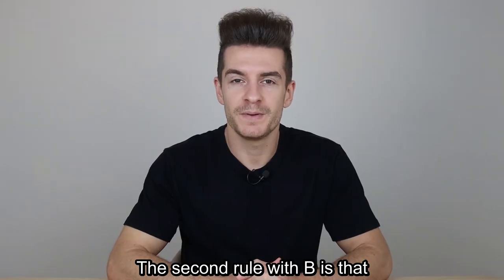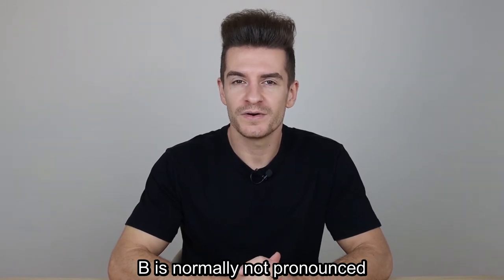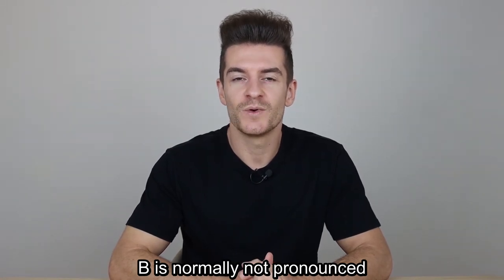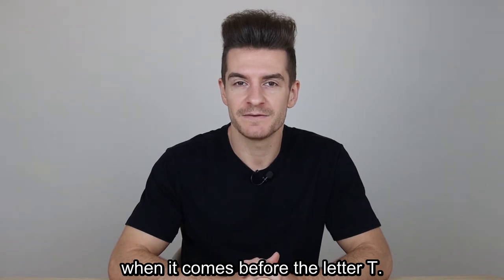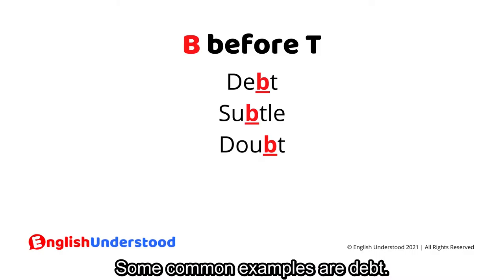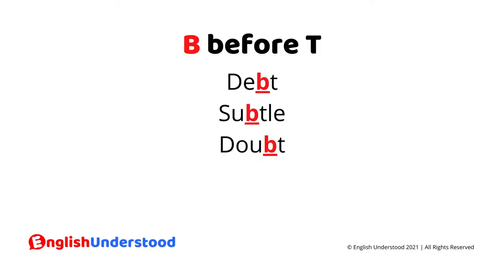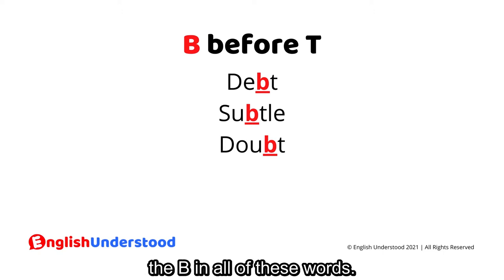The second rule with B is that B is normally not pronounced when it comes before the letter T. Some common examples are: debt, subtle, doubt. Again, we're not pronouncing the B in any of these words.